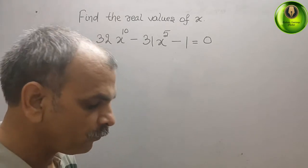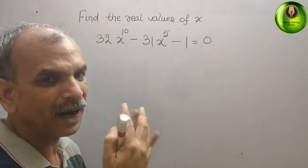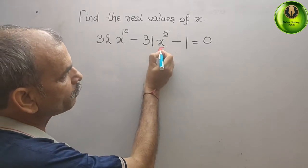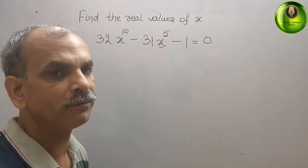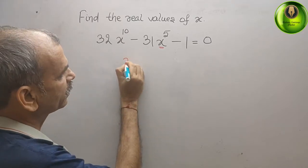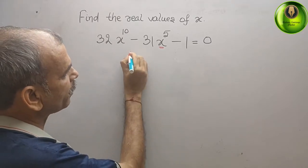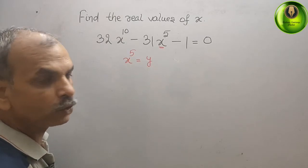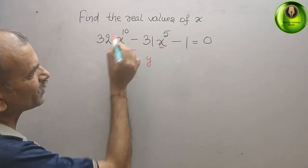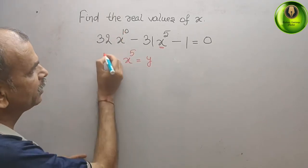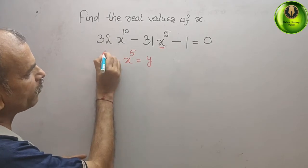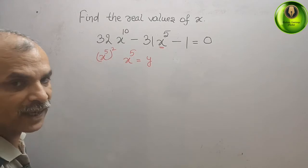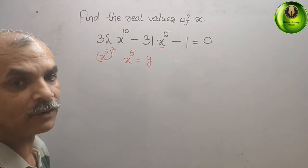Here what we will do is reduce the powers. We will take the minimum power, that is x to the power of 5. We will take x to the power of 5 equal to y. So x to the power of 10 can be written as x to the power of 5, whole to the power of 2, which gives you y squared.